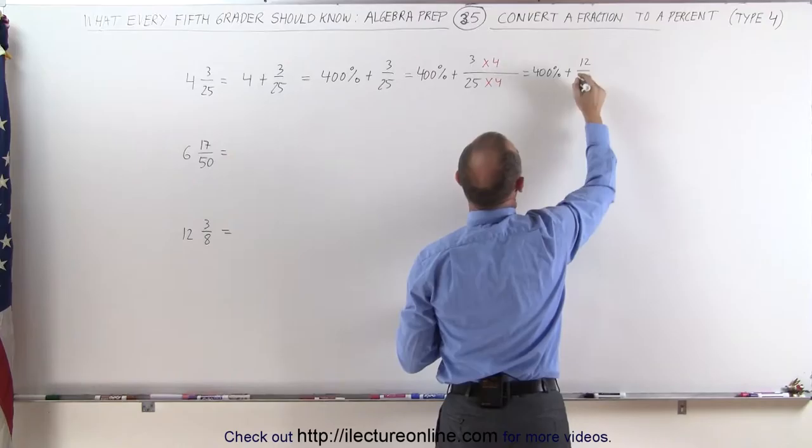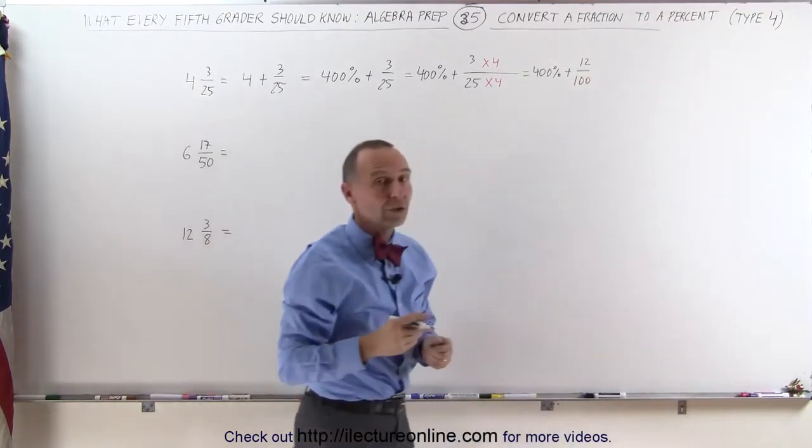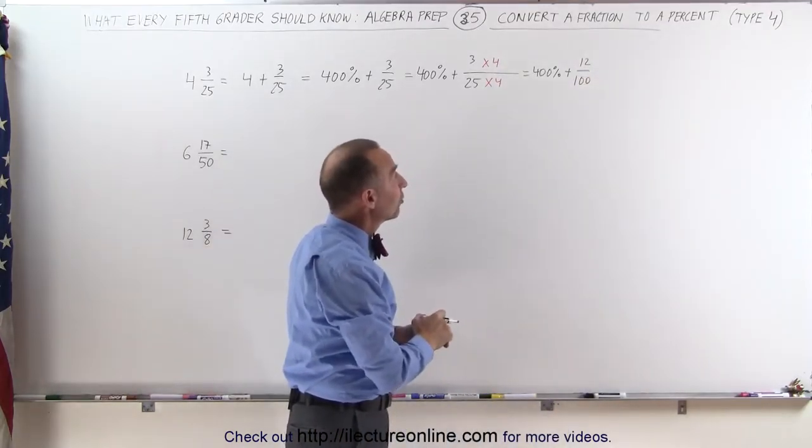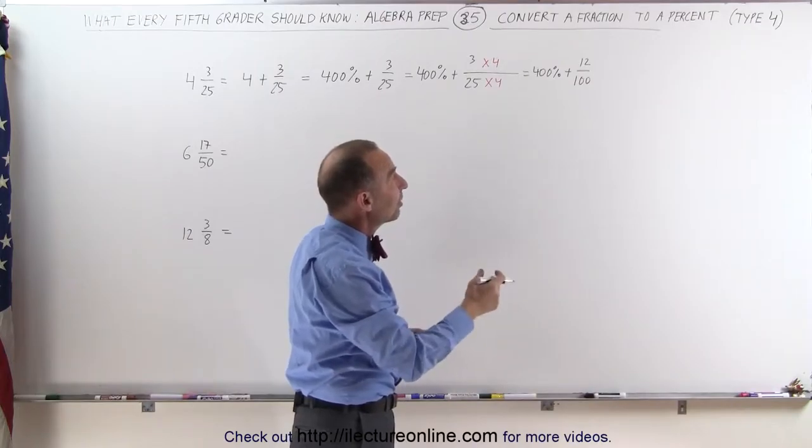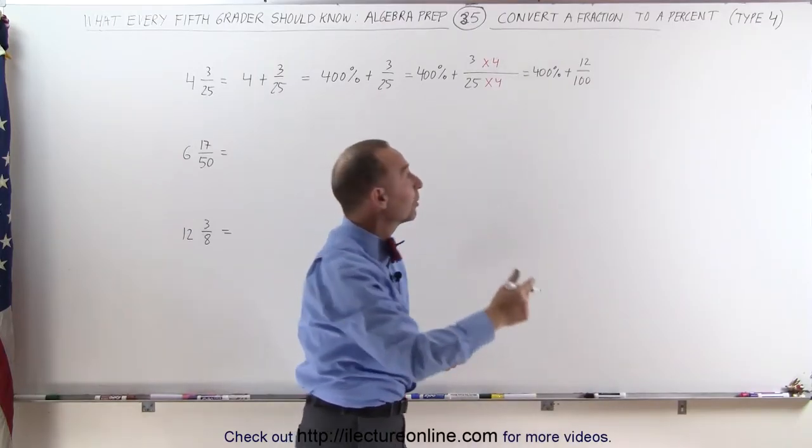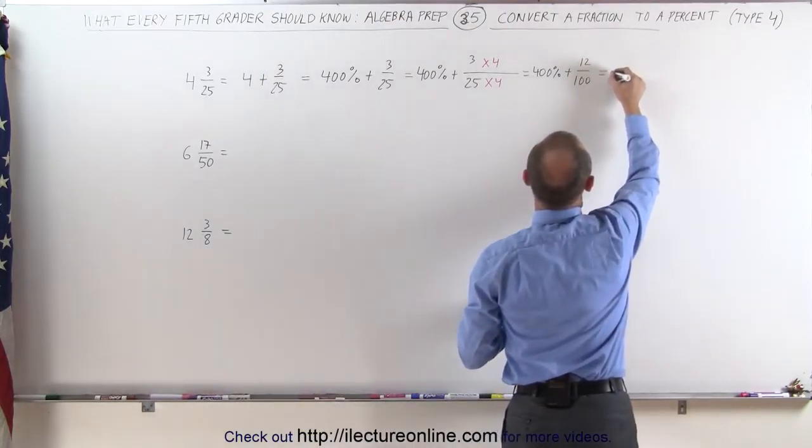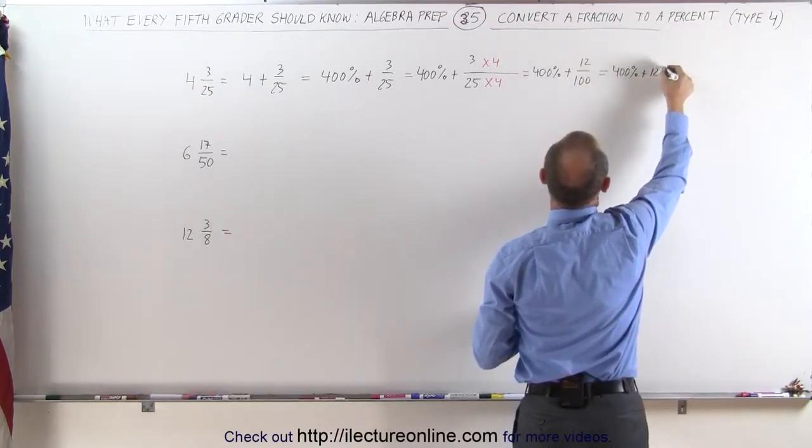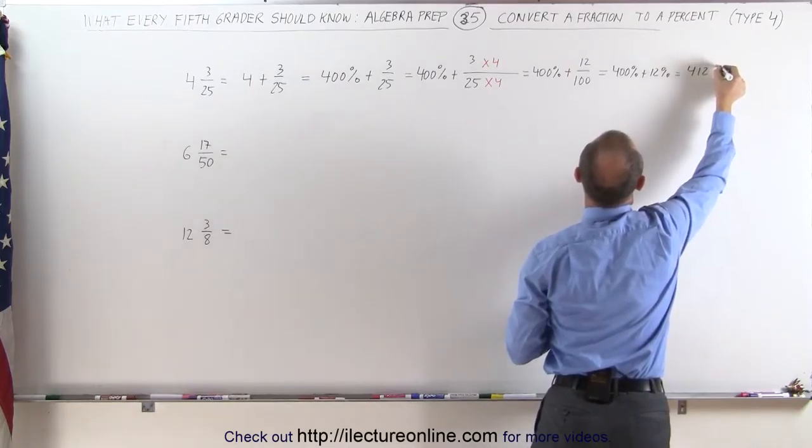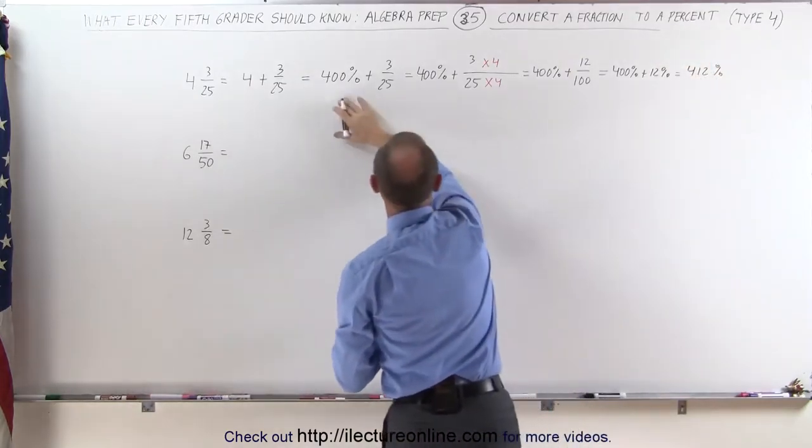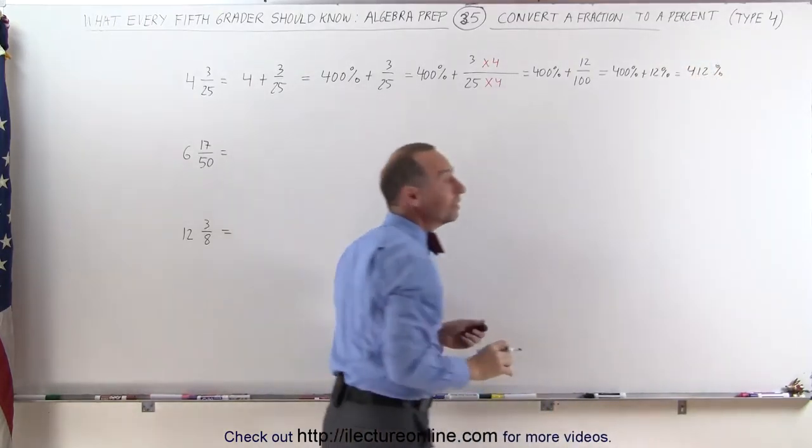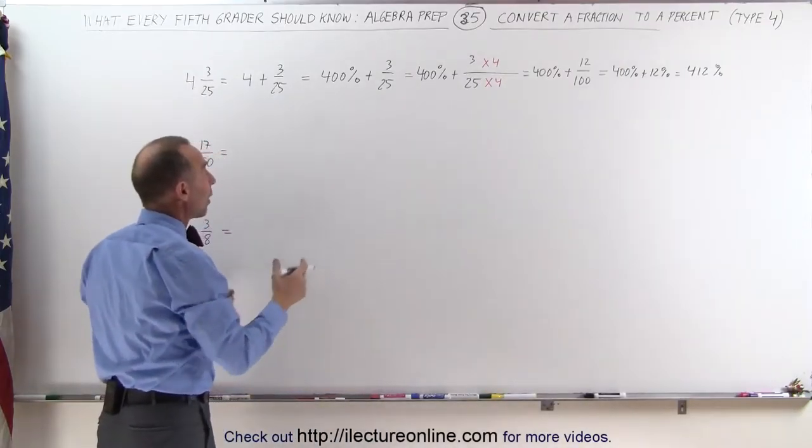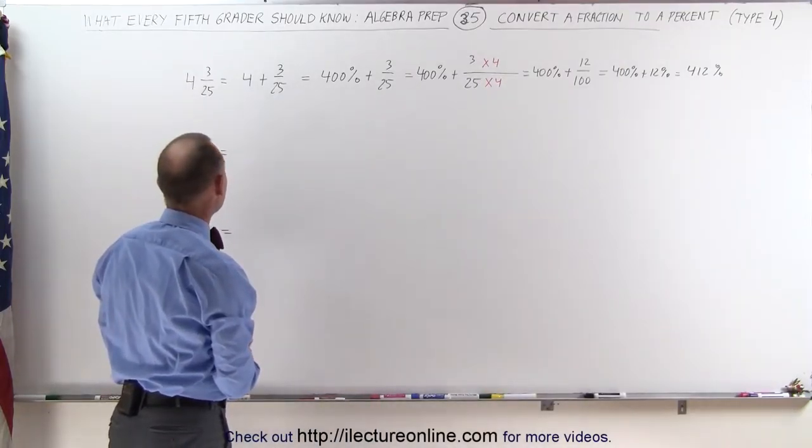And again, the rule is that if you have a fraction where the denominator equals 100, you can simply turn that number into a percent by taking the numerator and putting a percent behind it. This is then equal to 400% plus 12%, which equals 412%. I wrote it out like this so you can see how that's actually done, and of course after a while you can make it a little bit faster.